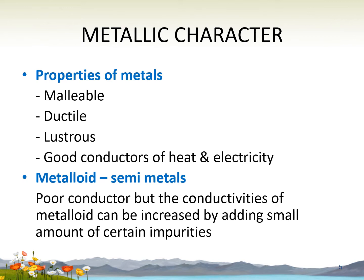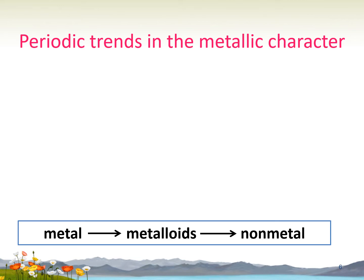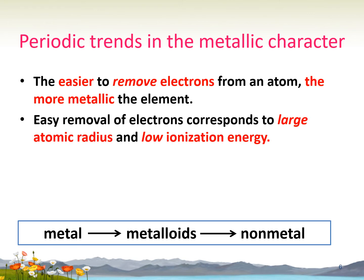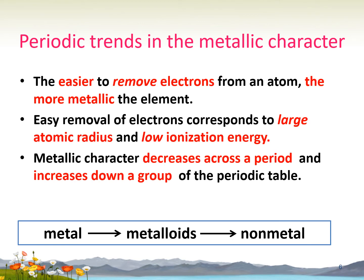In the periodic table, we also have metalloids, which are semi-metals. Semi-metals are poor conductors of heat and electricity, but the conductivity of metalloids can be increased by adding small amounts of certain impurities. Metallic character is related to the removal of electrons from an atom. The easier the electrons can be removed from an atom, the more metallic the element. Metallic character decreases across a period and increases down a group. Metallic character for metals is the highest, followed by metalloids and finally non-metals.